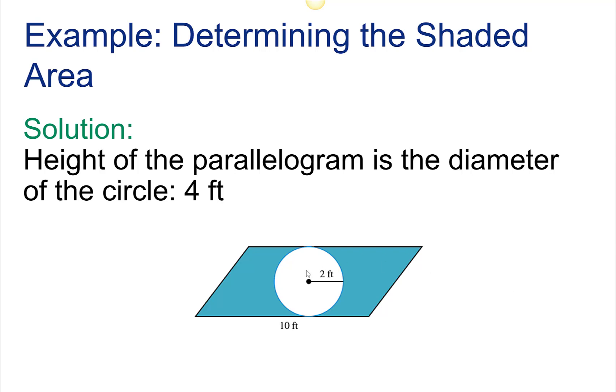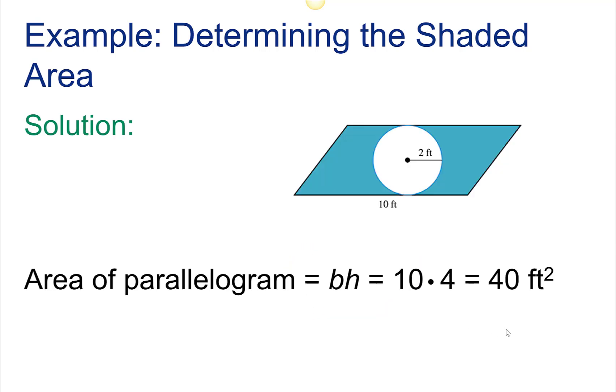What's the height of the parallelogram here? The radius of the circle is 2 feet, so if I continue this across, the diameter is 4 feet, and that must be the height of the parallelogram. The area of the parallelogram is the base times the height, 10 times 4, or 40 square feet.